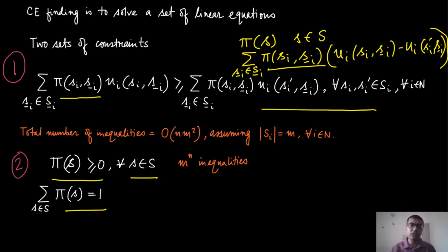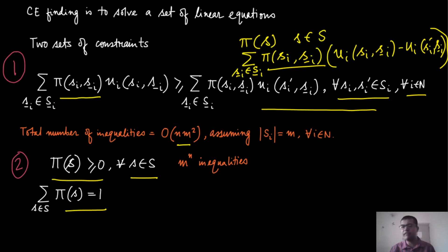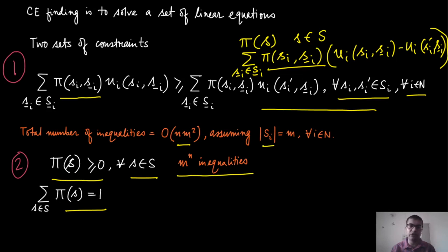Let us count how many inequalities we have. This inequality is written for every player and for every pair of strategies. So s_i and s_i' can be chosen in m² ways, and this has to happen for every player. Therefore, there are O(nm²) inequalities, assuming every agent has strategy sets of size m — this is clearly polynomial. For the pi(s) ≥ 0 constraints, you will have m^n inequalities, since the vector s can take m^n possible values.